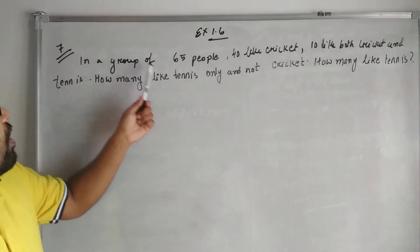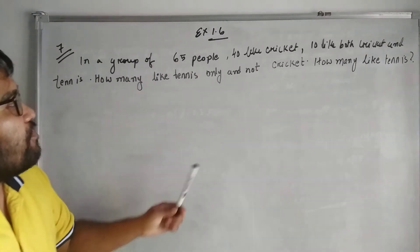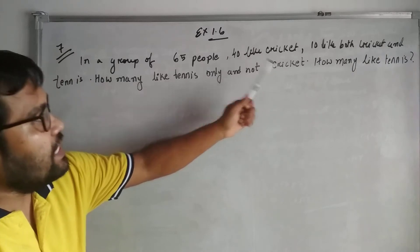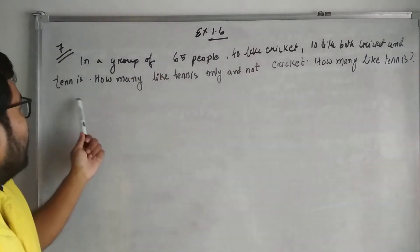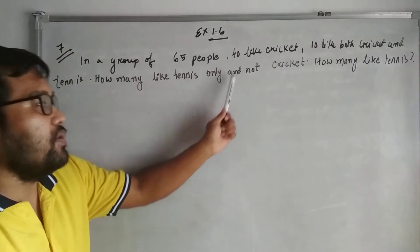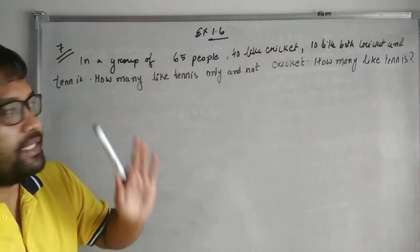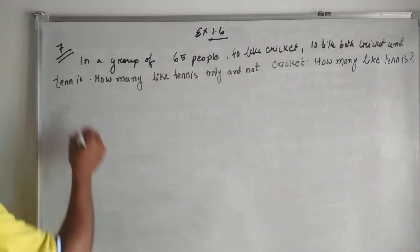In a group of 65 people, 40 like cricket, 10 like both cricket and tennis. How many like tennis only and not cricket? How many like tennis? So we need to solve this.